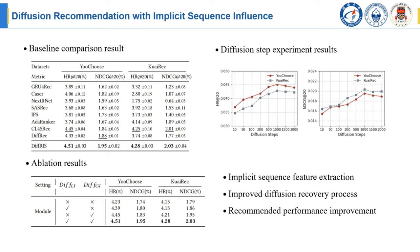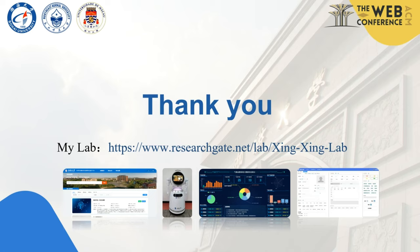In summary, our method proposes an implicit feature extraction strategy that guides the diffusion process with sequence features, effectively improving the performance of the recommendation system. Finally, thank you for watching. This is the link address of our research team and the actual project results display. We welcome everyone to actively communicate.